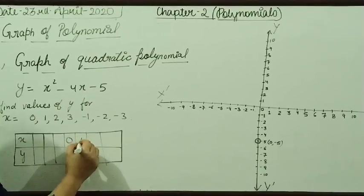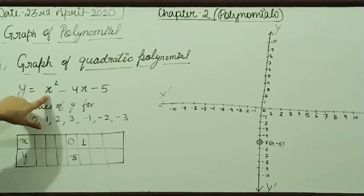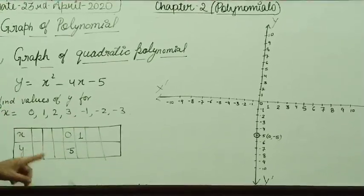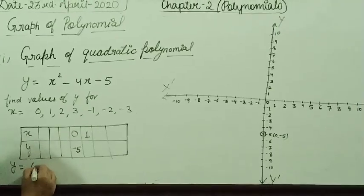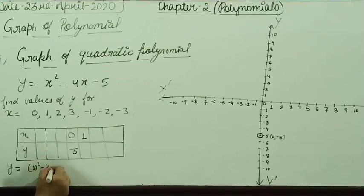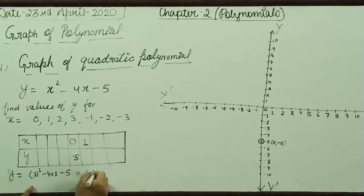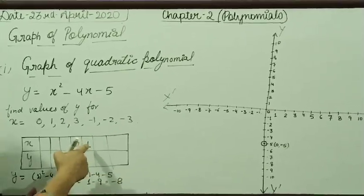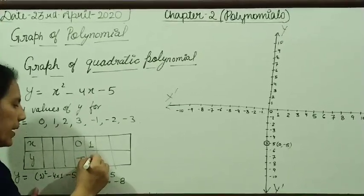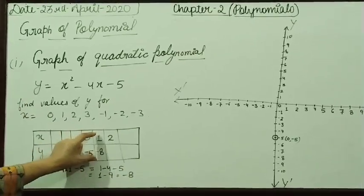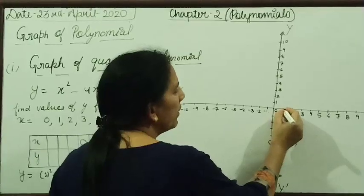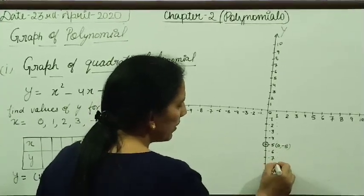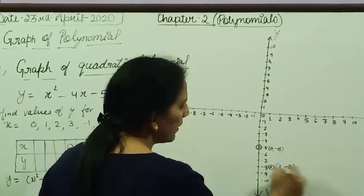Now take x is equal to 1. If x is equal to 1, then it will be 1 square minus 4 into 1 minus 5, which equals 1 minus 4 minus 5. So, your answer is minus 8. For x is equal to 1, the value of y is minus 8. Plot this point (1, -8).